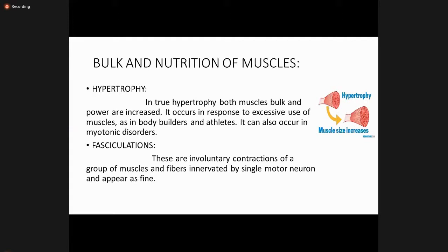Fasciculations are the involuntary contraction of a group of muscle fibers innervated by a single motor neuron, and they appear as a fine flickering movement under the skin. These fasciculation findings are assessed on inspection.